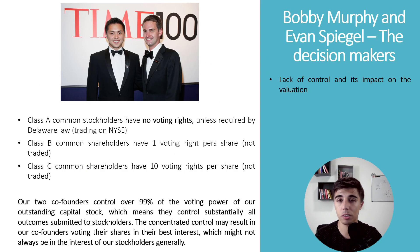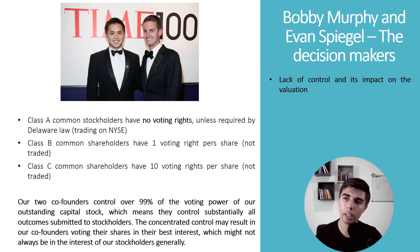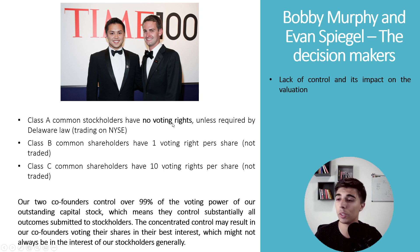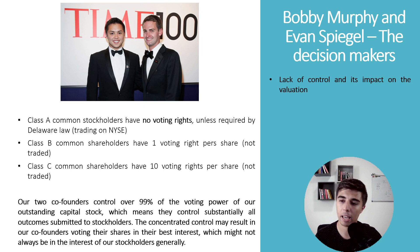Before we move into the financials, I'd like to point out that the two co-founders are the real decision makers. In the majority of companies, shareholders have the option to vote — but for Snap, that's not the case. All of the shares being traded publicly on the New York Stock Exchange are Class A common stocks, and they have no voting rights at all. Class B and Class C have one and ten voting rights respectively, but they're not traded, so you cannot buy a share with a voting right.